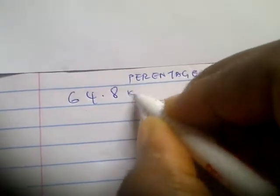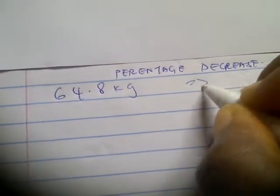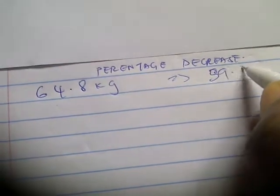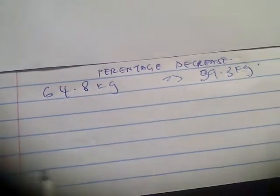For example, this one that you were asked to calculate: the weight was 64.8 kg and then it reduced to 59.3 kg.